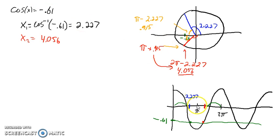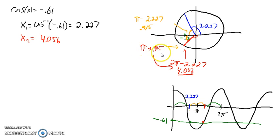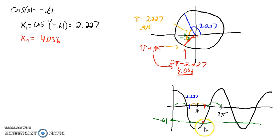Alternatively, you could say again by symmetry that these two distances are the same. So you could find this distance by doing π minus 2.227, coming up with 0.915, and then add the same amount to get the second solution: π plus 0.915. So whether we're using the unit circle or the function graph, the approaches are the same — we're using the symmetries in the same way.